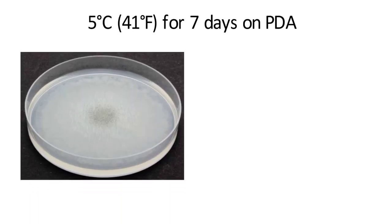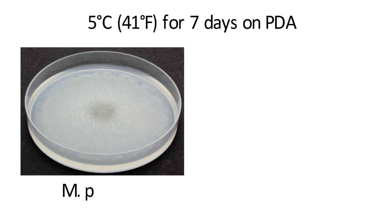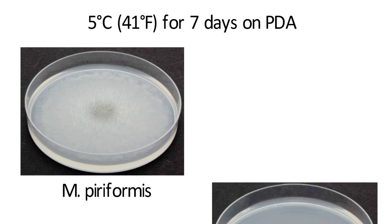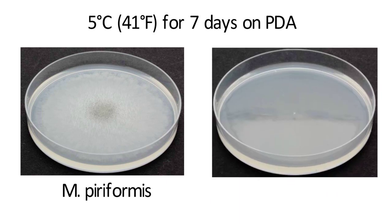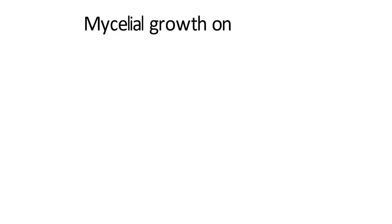Now at 5 degrees Celsius for seven days. Mucor piliformis grows slowly and started to produce sporangia in the center of the media. Rhizopus stolonifer, however, cannot grow below 5 degrees Celsius.